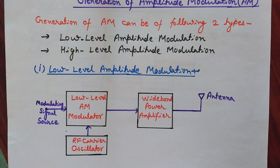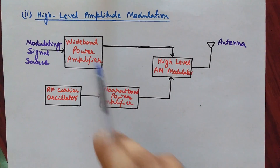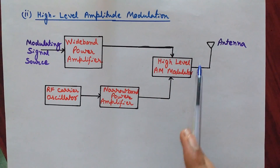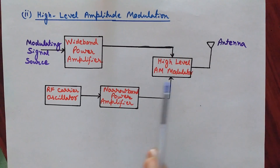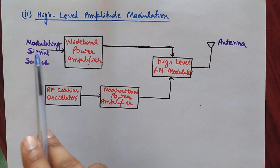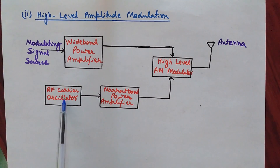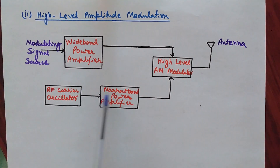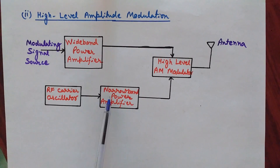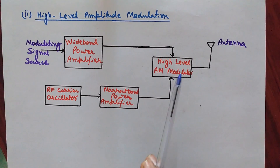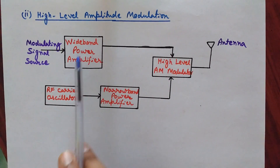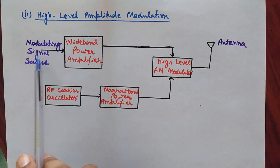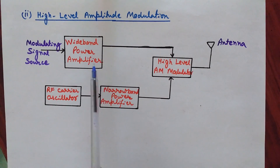In the case of high-level amplitude modulation, here is the block diagram. The high-level AM modulator operates at high power levels. Before applying the modulating signal (the message signal) and the carrier wave to the modulator, we first use a wideband power amplifier to amplify the modulating signal and a narrowband power amplifier to amplify the RF carrier wave. They are then applied to the high-level AM modulator.